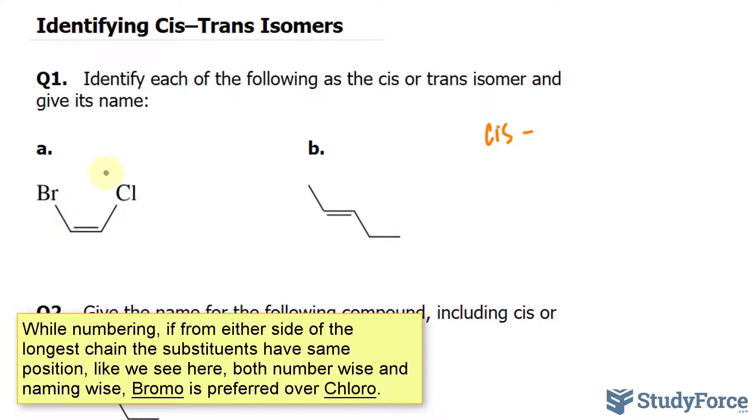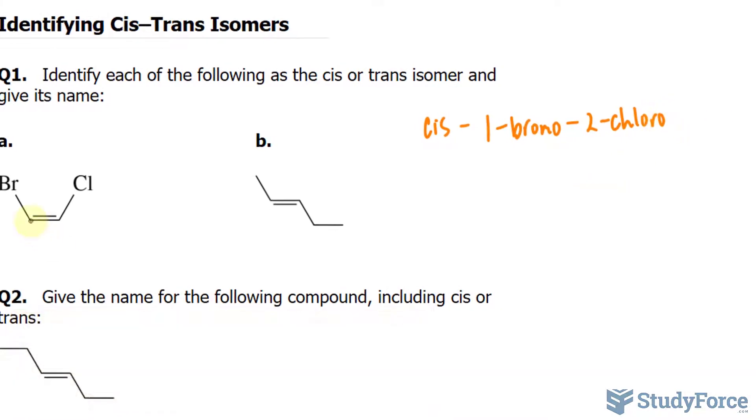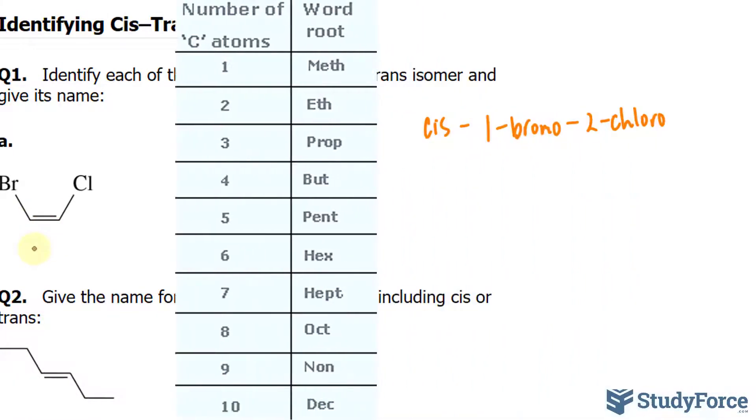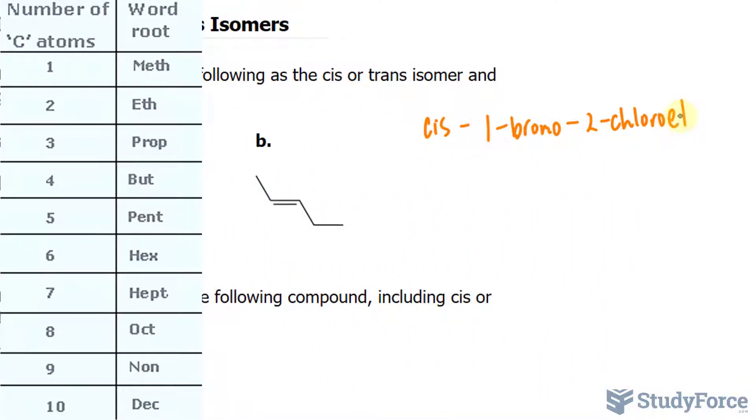So we'll say that this is 1-bromo, 2-chloro, and it's a two-carbon molecule, so we end with ethene.